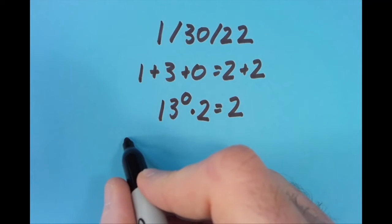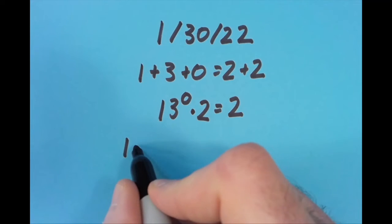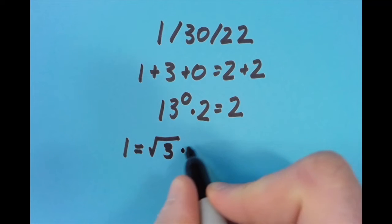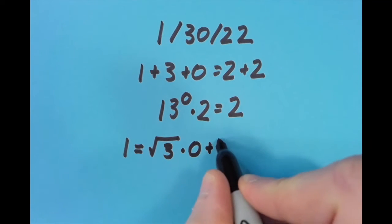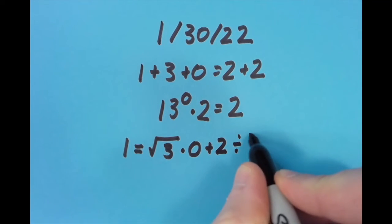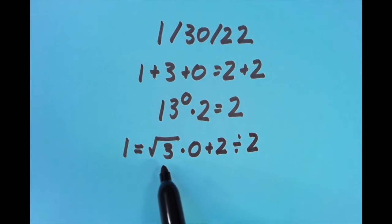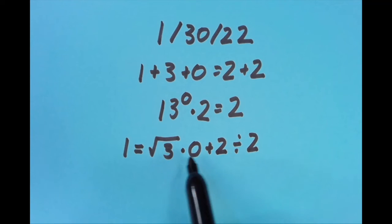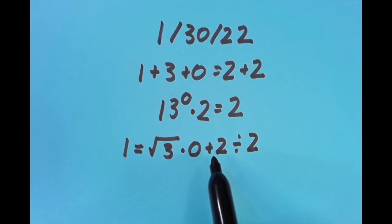I then put the equal sign in the first position, saying that 1 equals the square root of 3 times 0 plus 2 divided by 2. So this gives us 0. Then we have to do the order of operations. So then we do 2 divided by 2 next, which is 1. So 0 plus 1 equals 1.